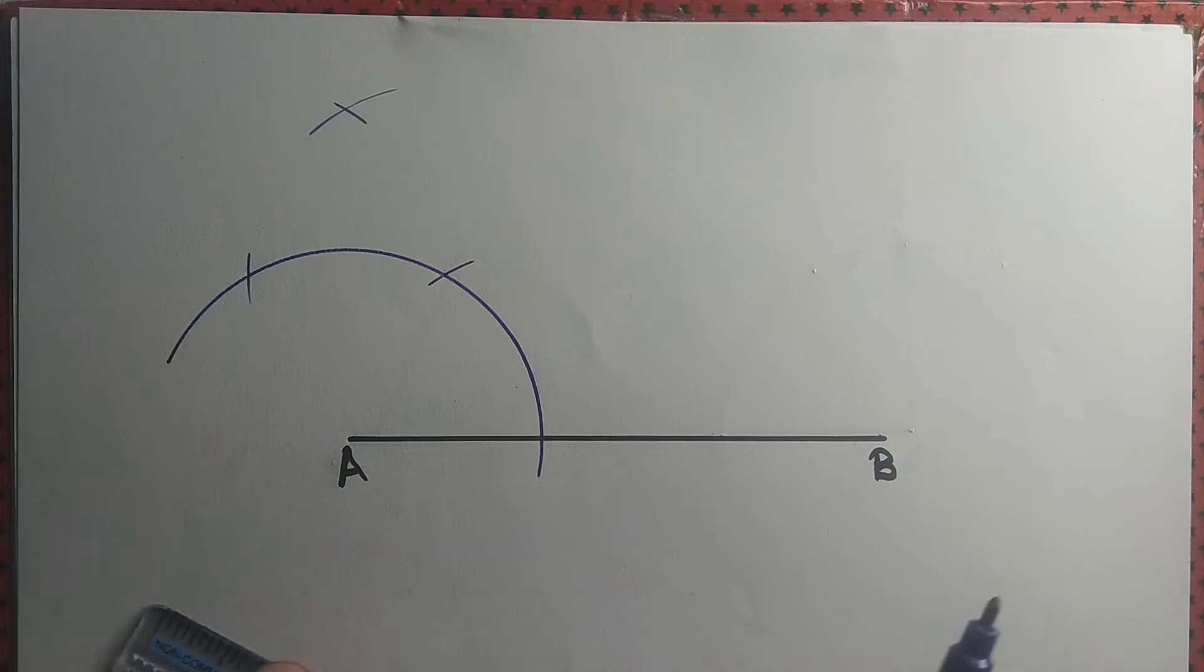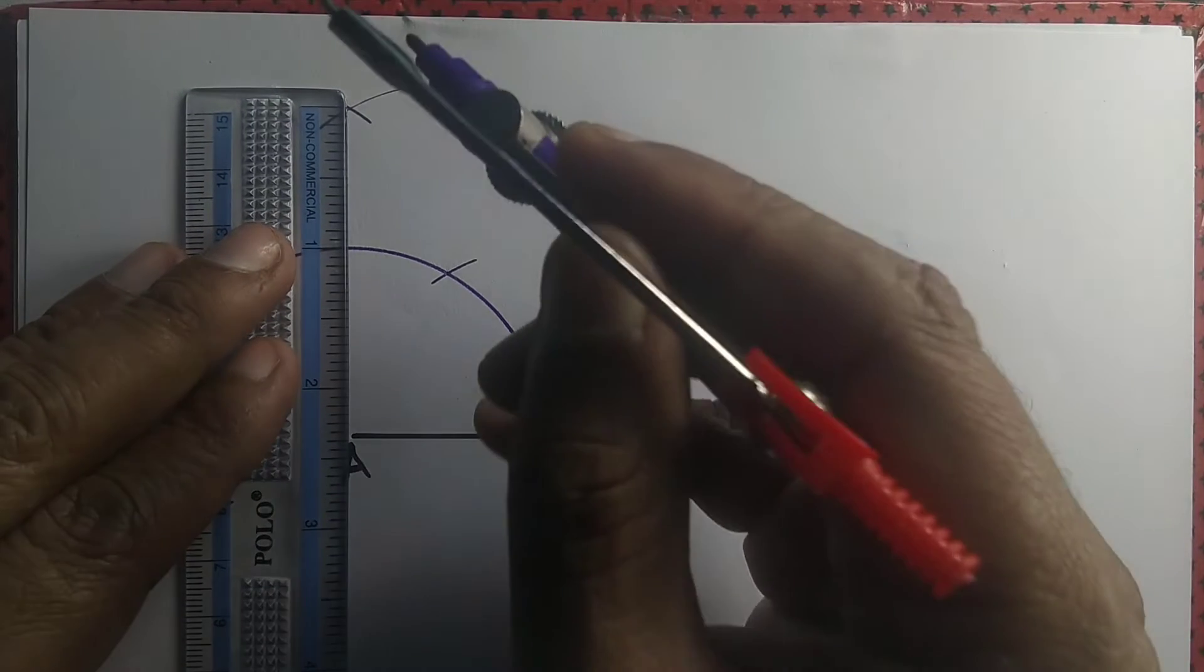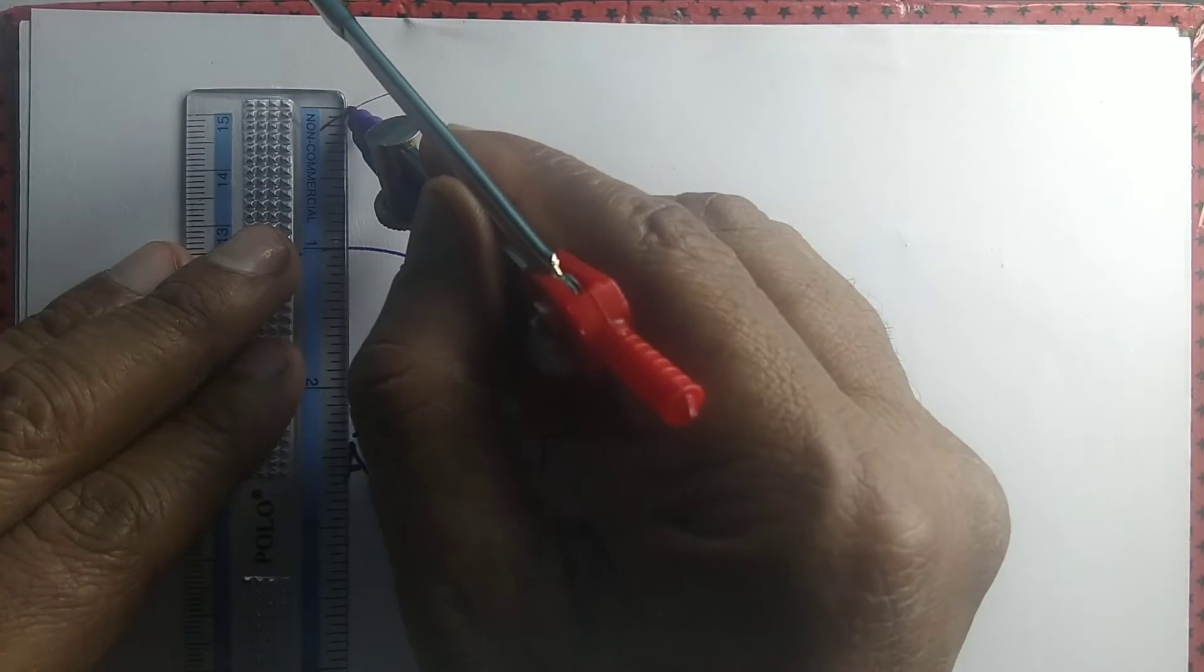The last 2 arcs will intersect at some point. Let us join that point with point A.